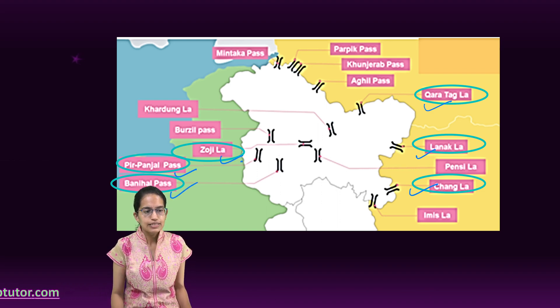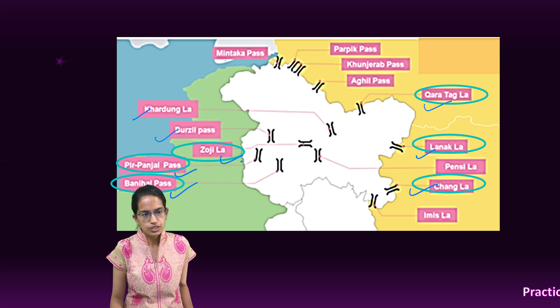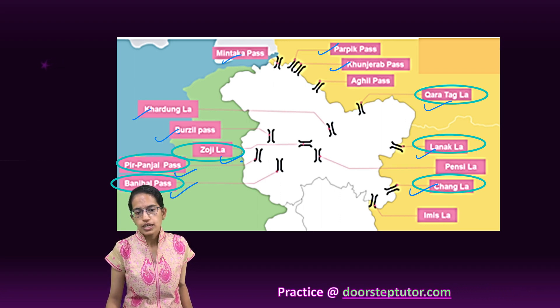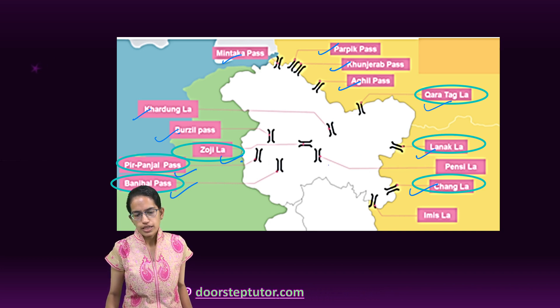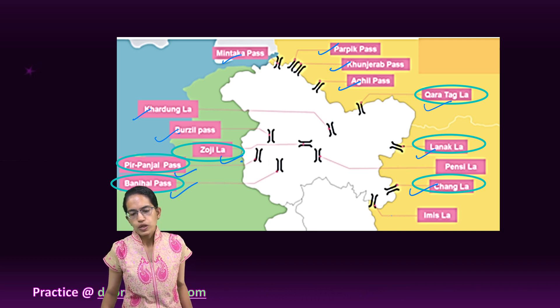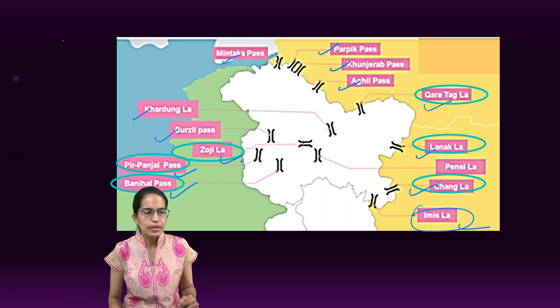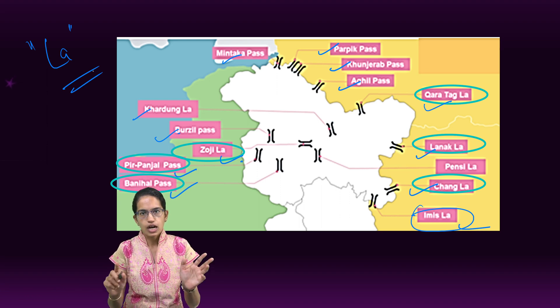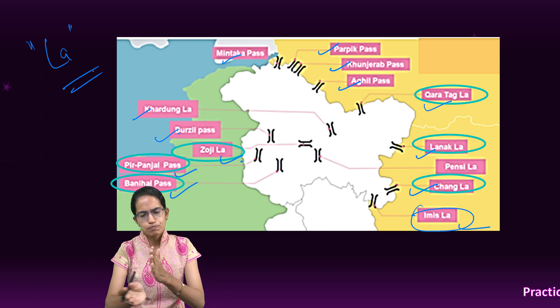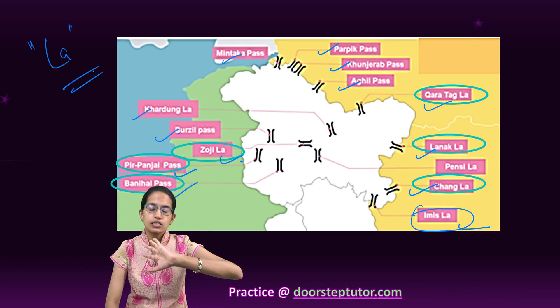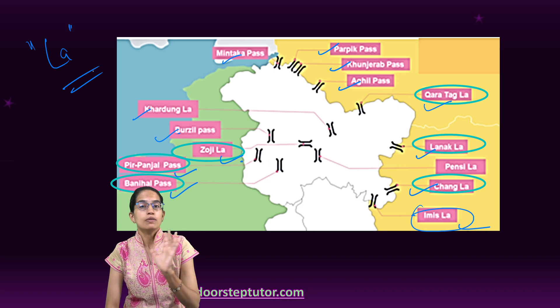Here we have marked some of the major passes: the Quara Tag pass, Lanak La, Chang La pass, Banihal pass, Pir Panjal, and Zoji La have been marked. Besides that, you have Khardung La pass in the region of Ladakh, Burzil La pass in the regions of Pakistan-occupied Kashmir, Mintaka pass, Parpik pass, Zunzer La pass, Aghil pass.